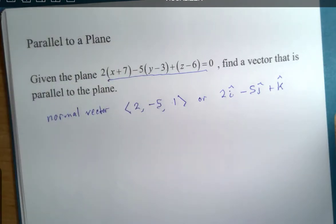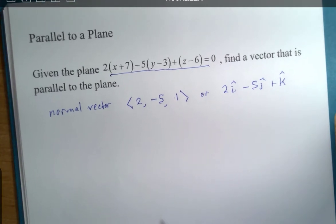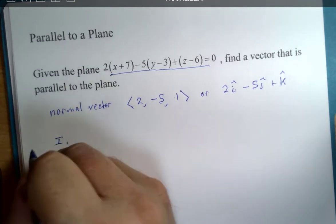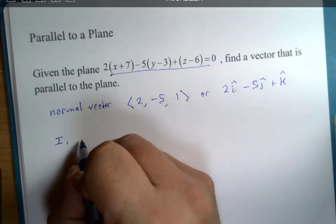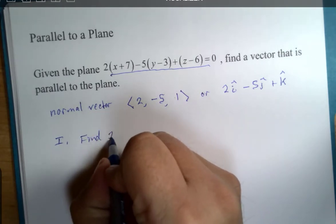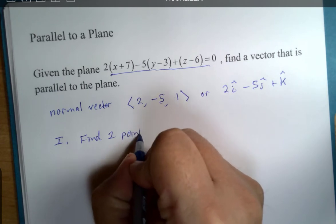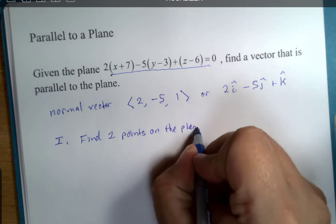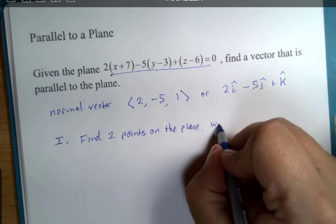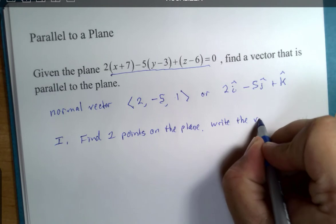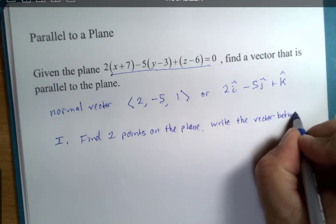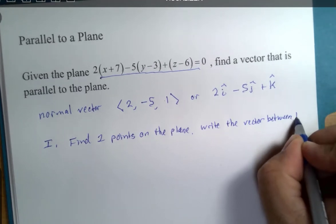So, two methods. The first method I'm going to spend very little time on, but I want to honor it and mention it at least. Alright, so here's that first option. Find two points on the plane. Write the vector between them, okay?